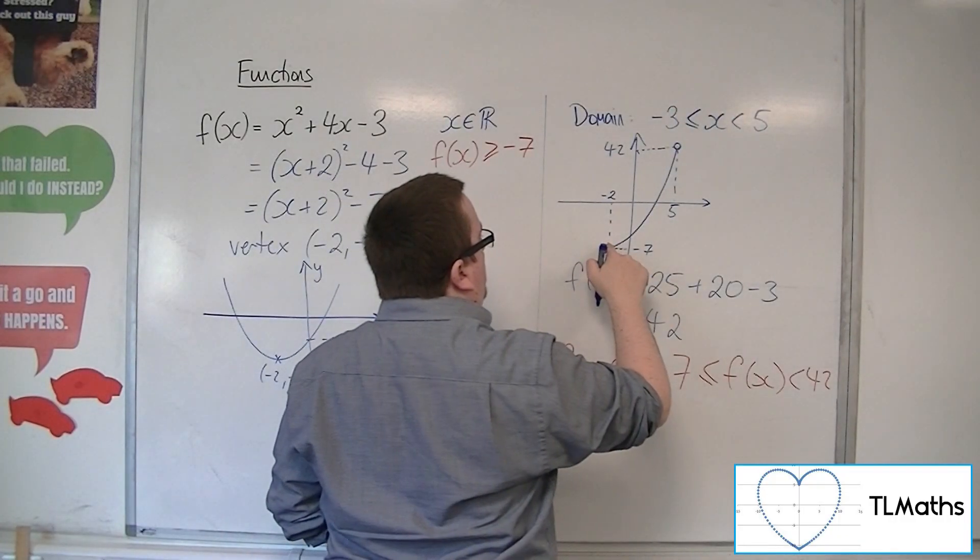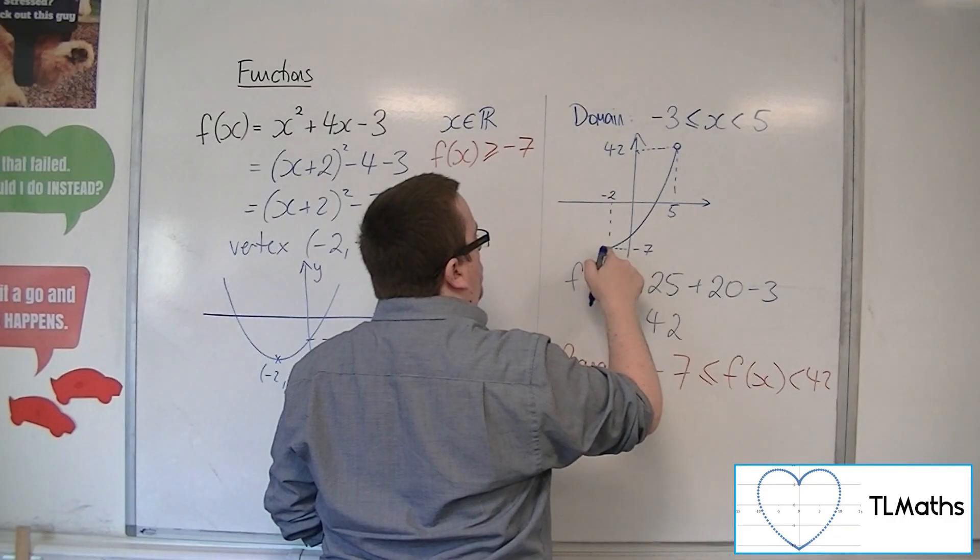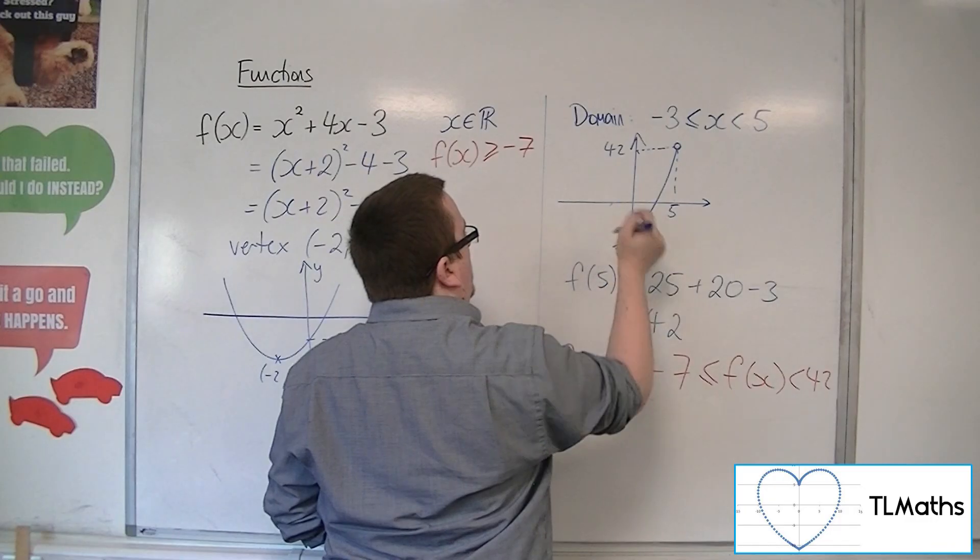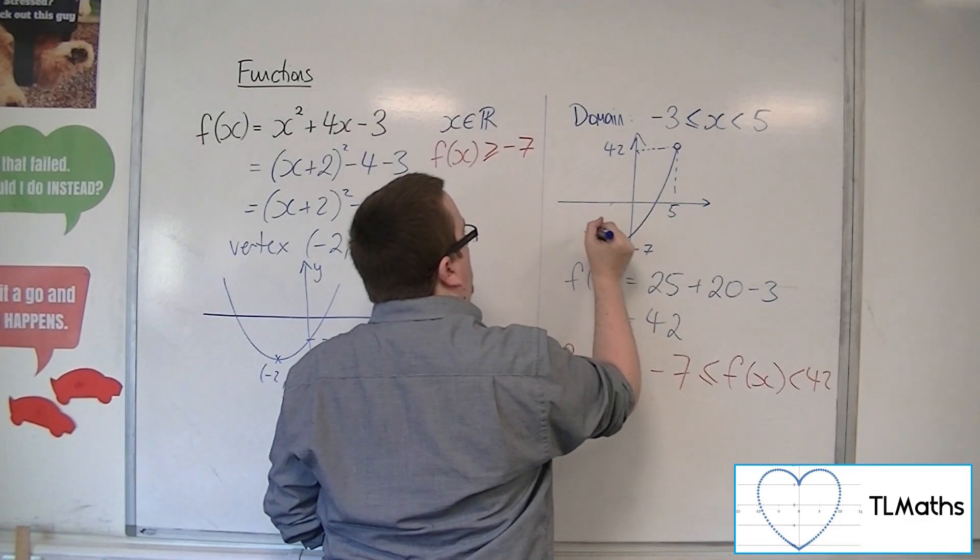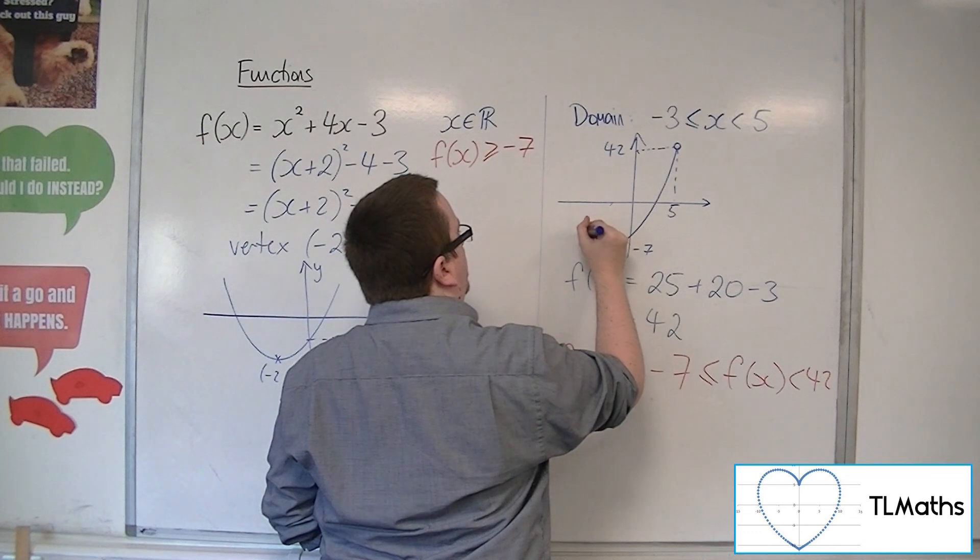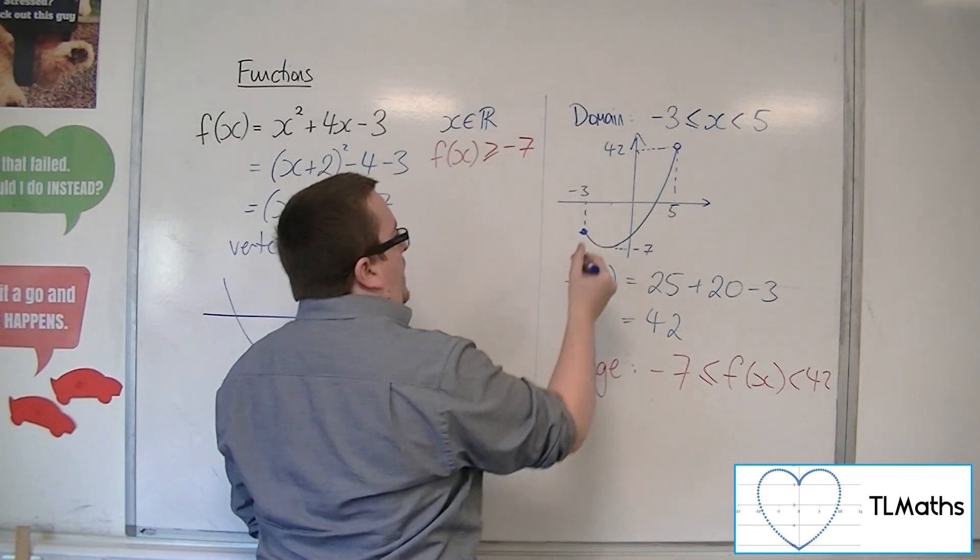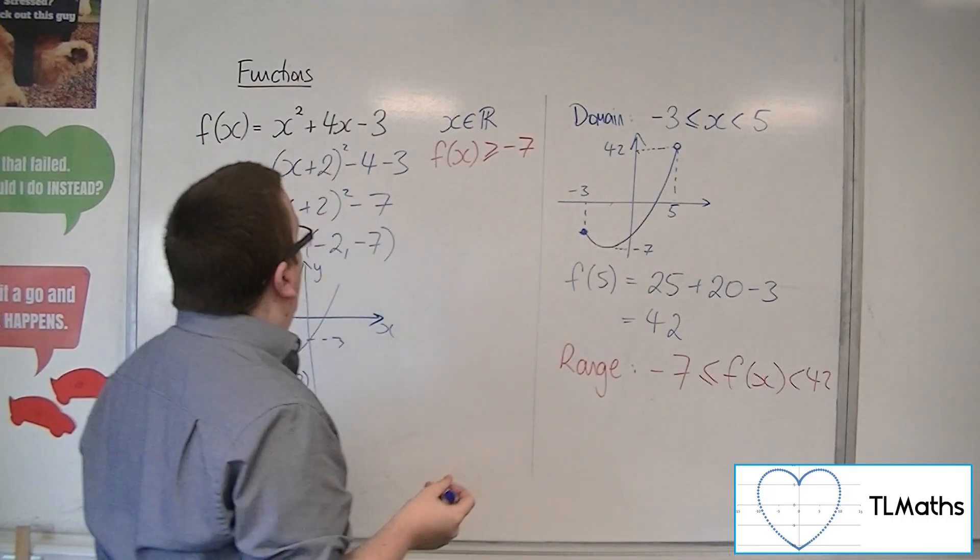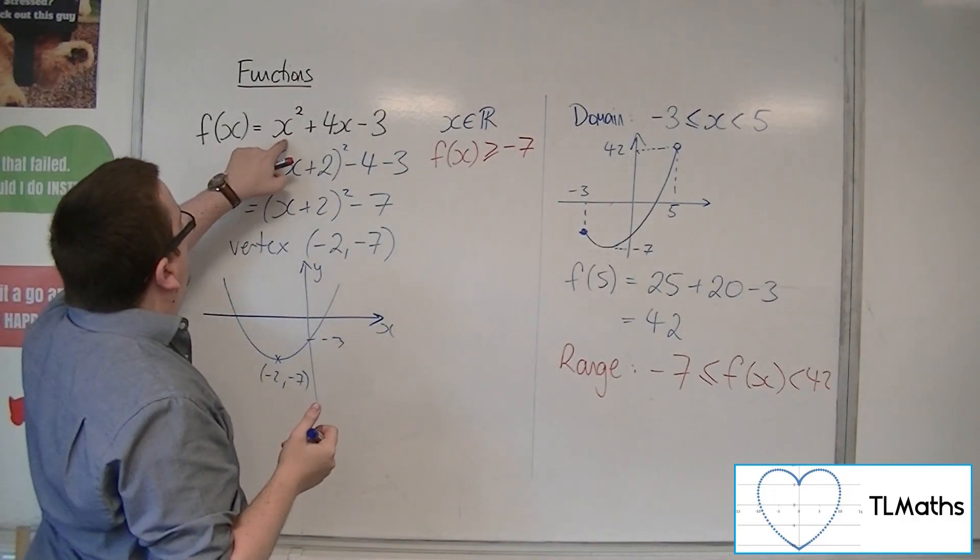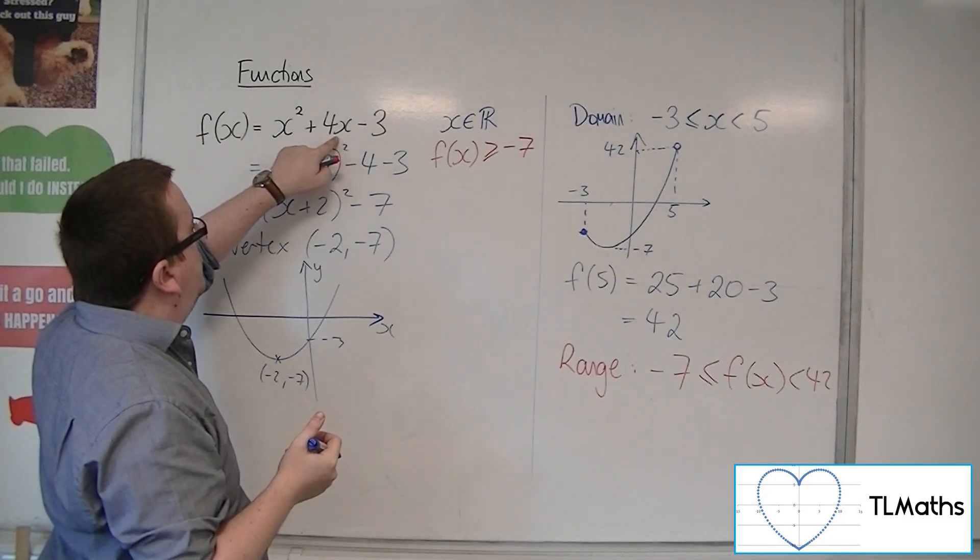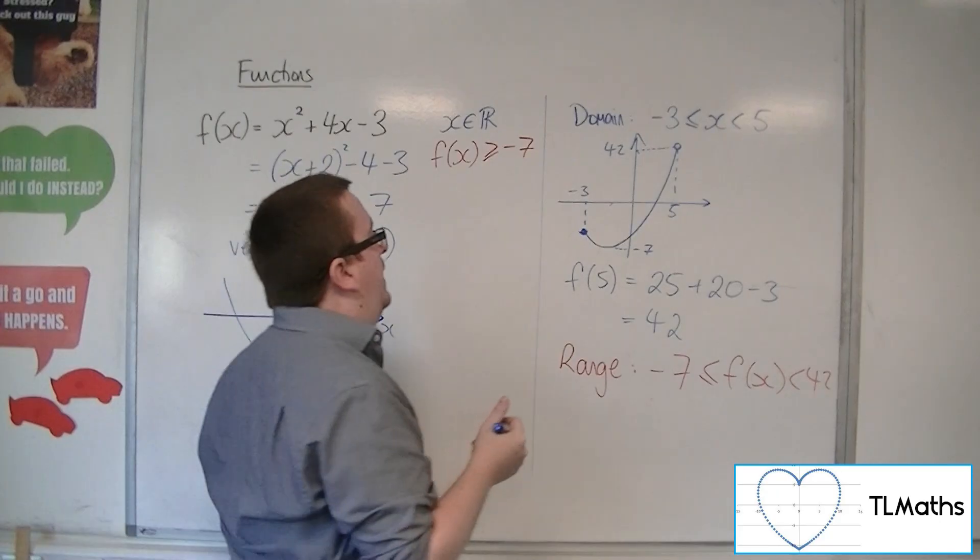now that would mean that the curve wouldn't end there. The curve sits at that point and comes back round. And that's where -3 would be. Now -3 would be 9 - 12, so -3 - 3, so -6.